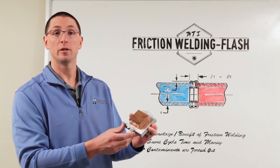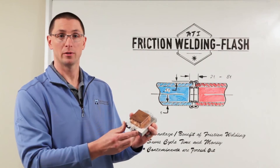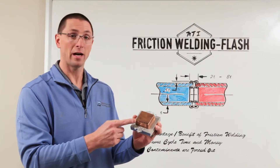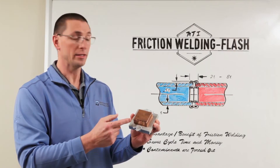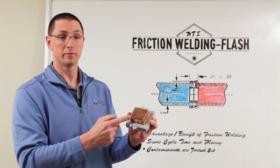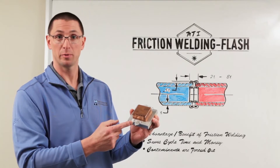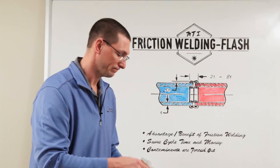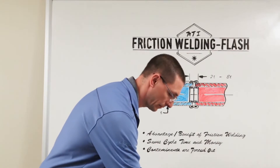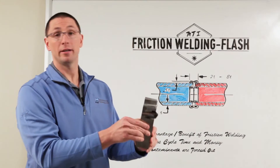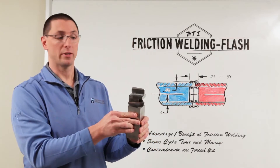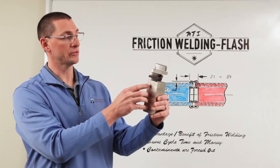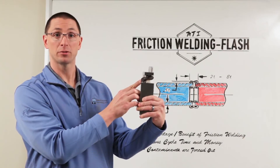Here's a linear friction weld between copper and aluminum. The thermal conductivity properties of copper don't allow any displacement from the copper, but you do see material displacement from the aluminum. Here's the flash formation. Here's another linear friction welding example where we have an odd shaped weld geometry, and as a result you get an odd shaped flash.